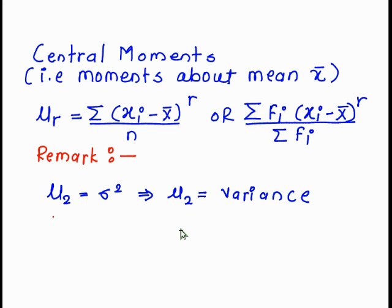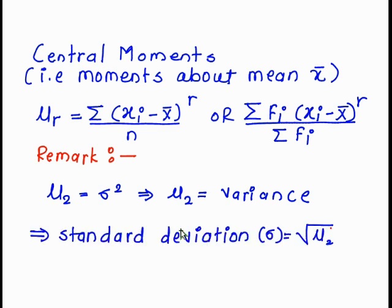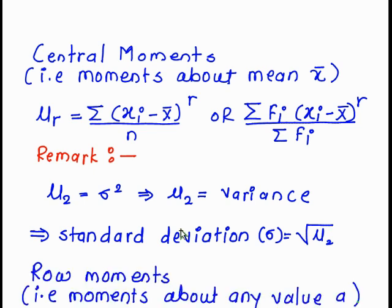A remark: mu 2 is equal to sigma square, meaning sigma square is variance. Therefore variance is equal to mu 2. As we know, the square root of variance is nothing but standard deviation, so standard deviation is equal to square root of mu 2.